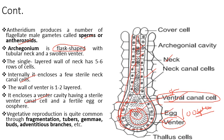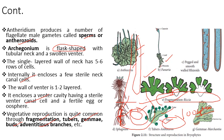Vegetative reproduction in bryophytes is very common. It occurs through fragmentation, by the formation of tubers, gemmae, or adventitious branches. Fragmentation is the most common method of vegetative reproduction in bryophytes.